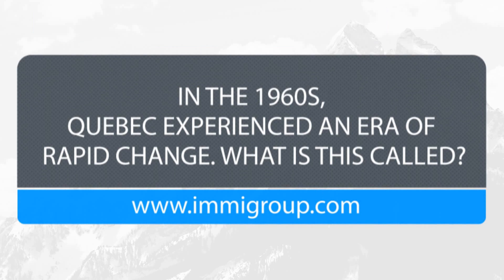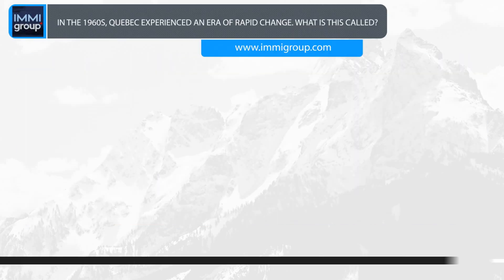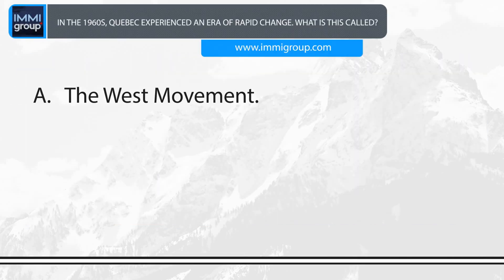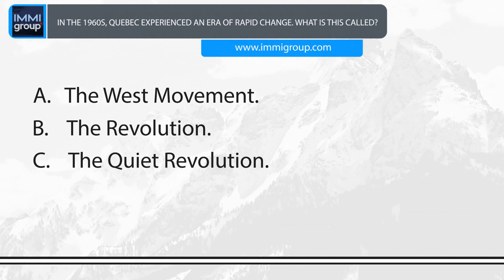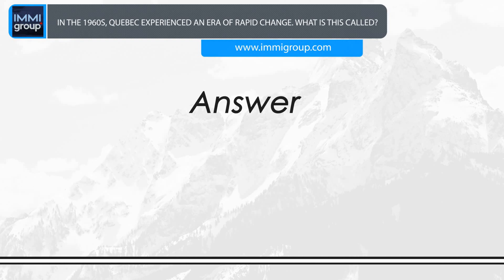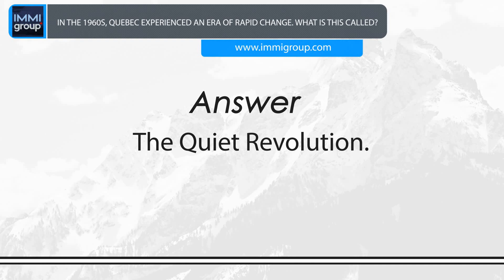In the 1960s, Quebec experienced an era of rapid change. What is this called? A. The West Movement. B. The Revolution. C. The Quiet Revolution. D. La Francophonie. Answer: The Quiet Revolution.